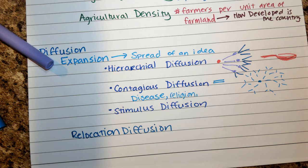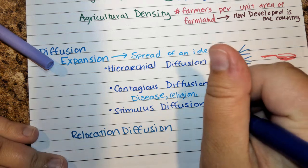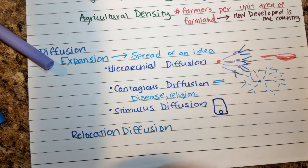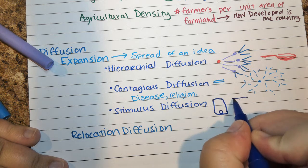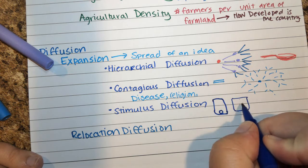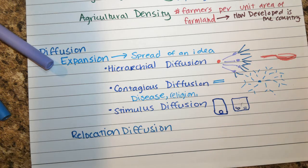Stimulus diffusion refers to the spread of an underlying principle even if the specific characteristic itself doesn't spread. For example, before the iPhone, touch screen technology on phones was brand new. Now it's on every type of phone — iPhones, iPads, Android phones, Fire tablets. The underlying idea of touch screen spread even as the specific product didn't remain exclusive.